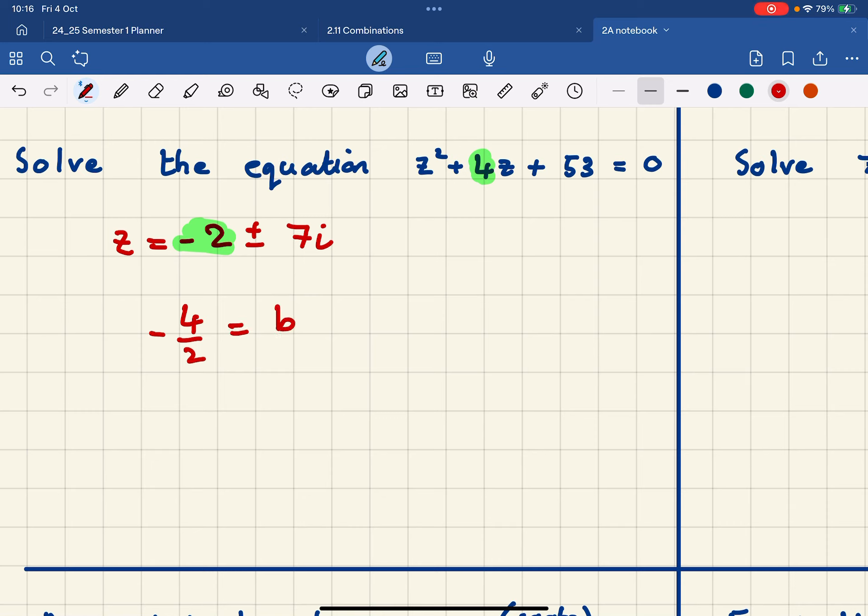Now the c part, the constant part at the back here, that number there is made up by doing negative 2 squared and 7 squared. And I get that negative 2 and that 7 from here and here, and that gets me the c number to be 53.